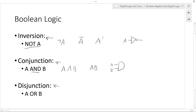We also have disjunction, which implements an OR operation. A ORed with B is written like this. The OR operation can be implemented in digital logic using the OR gate.